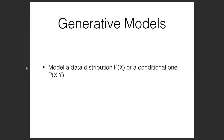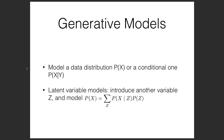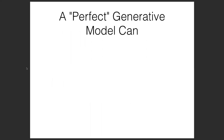Generative models try to model a data distribution p(x), or a conditional one, for example p(x|y). Latent variable models introduce another variable z and model the probability of x while integrating over the latent variable z. We've already talked about a pretty wide variety of generative models, including standard language models that calculate the probability p(x) and can be used to generate sentences or other things.